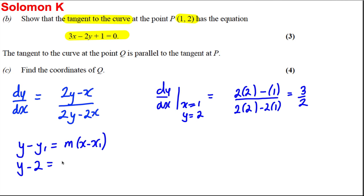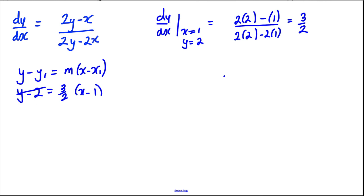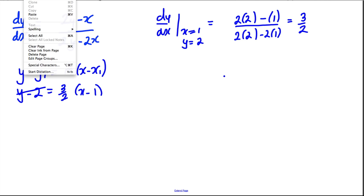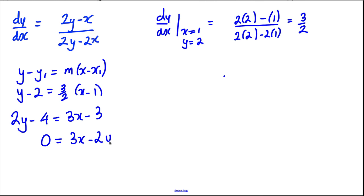Using y minus y₁ = m(x minus x₁), we get y minus 2 = (3/2)(x minus 1). Doubling both sides: 2y minus 4 = 3x minus 3. Rearranging by subtracting 2y and adding 4 to both sides gives 0 = 3x minus 2y plus 1, which is exactly the equation in the question.